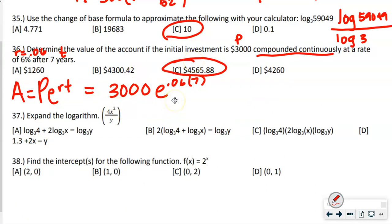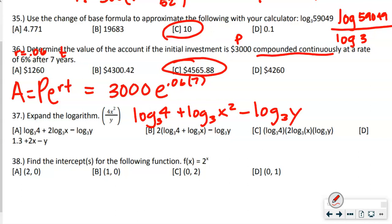Number 37 says expand the logarithm. Whatever's in the numerator is positive, whatever's in the denominator is negative. These all have log base 3. So we get log base 3 of 4, plus log base 3 of x squared, minus log base 3 of y. The exponent on x squared moves out front, giving us: log base 3 of 4 plus 2·log base 3 of x minus log base 3 of y.